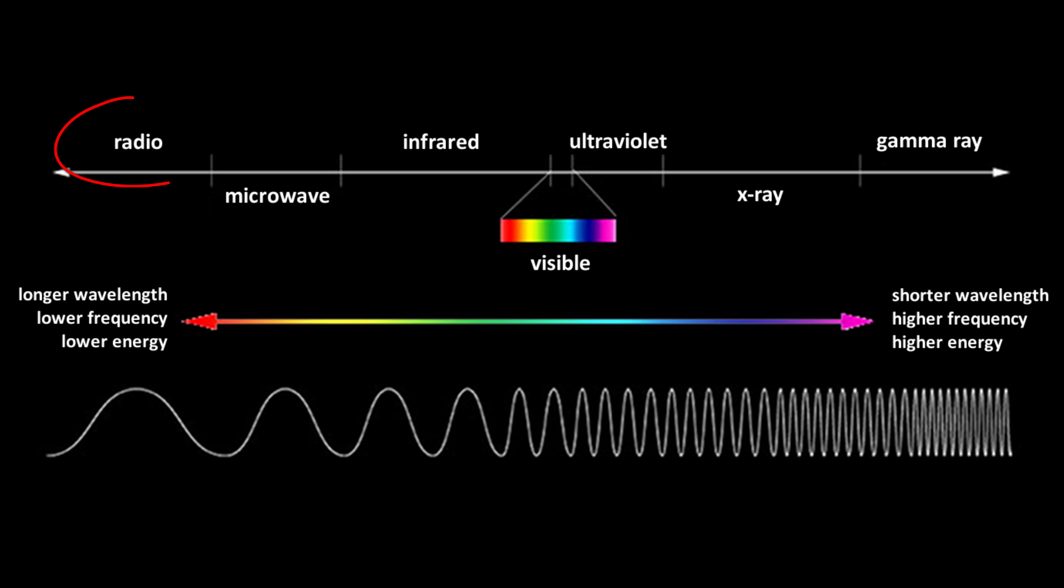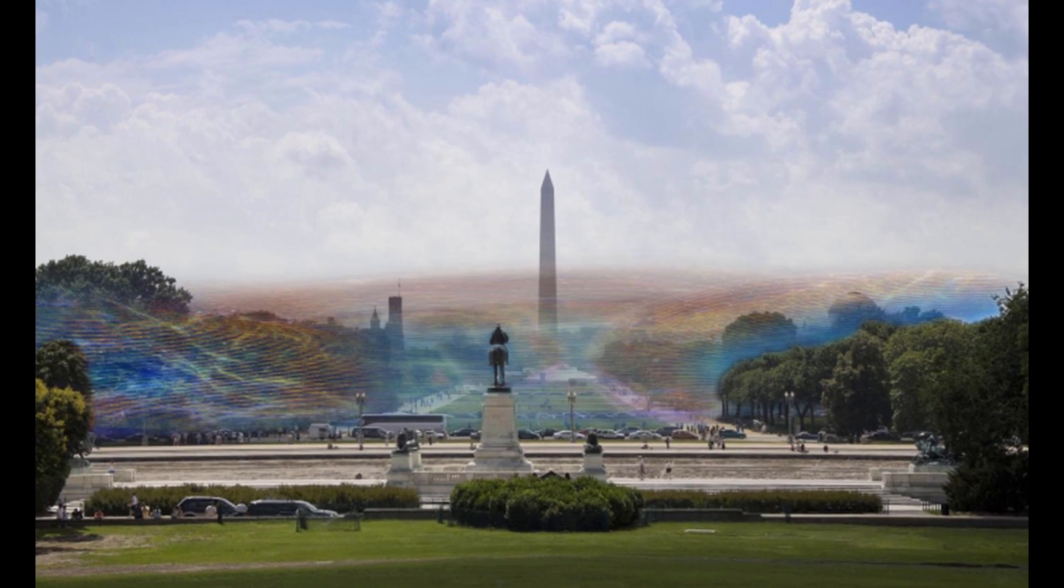But let's say somehow we could cancel out everything except for a single part of the spectrum. For example, if our retina was sensitive to just radio waves, many electronics like TVs and radios would glow, and we could actually see Wi-Fi hotspots.